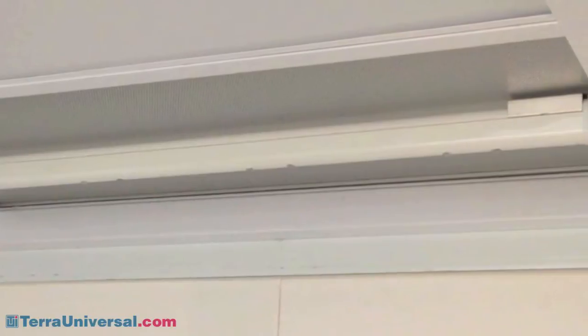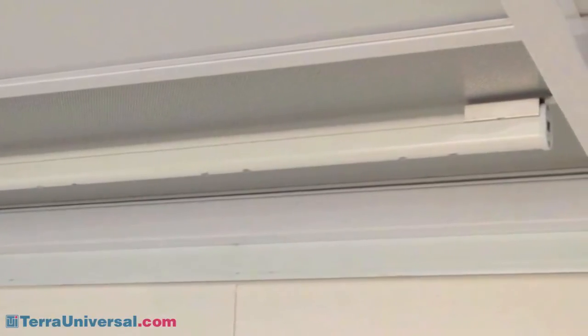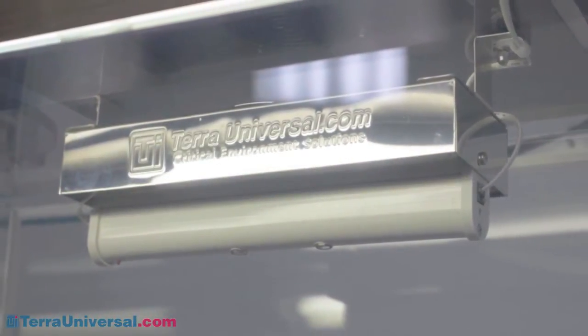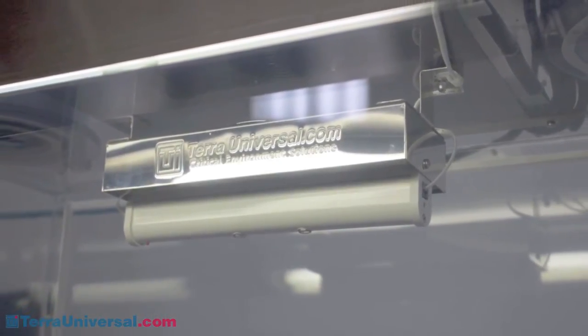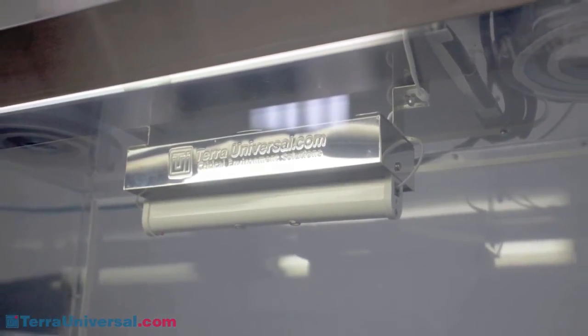This video demonstrates the effectiveness of an ionizing bar mounted inside a clean room. Other common uses include laminar flow hoods and glove box isolators, any place where electrostatic discharge and contamination are critical concerns.